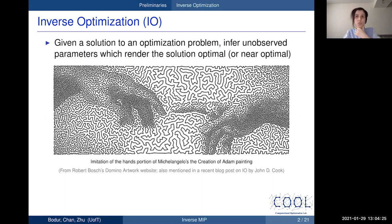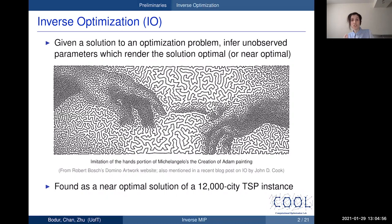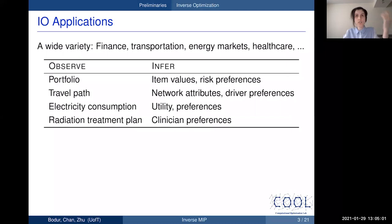Here's a cool picture from Robert Bush's website — an imitation of the hands portion of Michelangelo's famous painting. Robert actually obtained this picture as a near-optimal solution to a 12,000-city TSP instance. As pointed out by a blog post by John Cook, Robert is doing a sort of inverse optimization for his artwork — searching for an optimization problem to yield the desired solution as an optimal or near-optimal one.